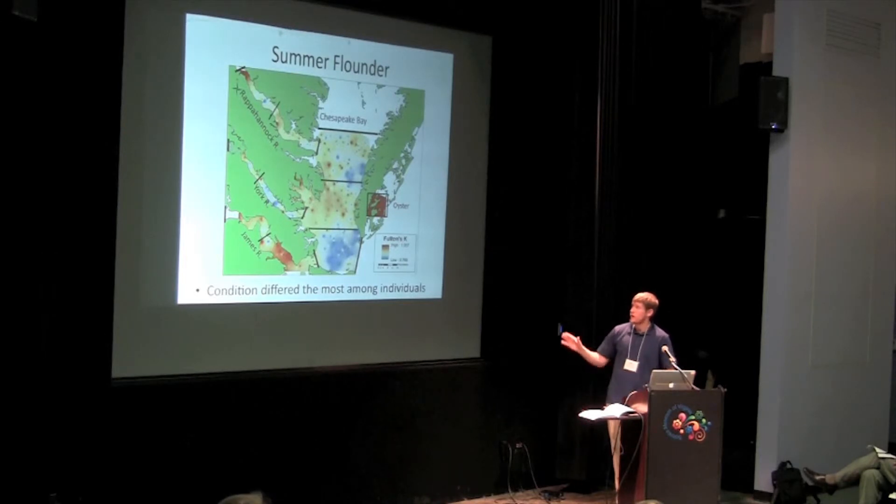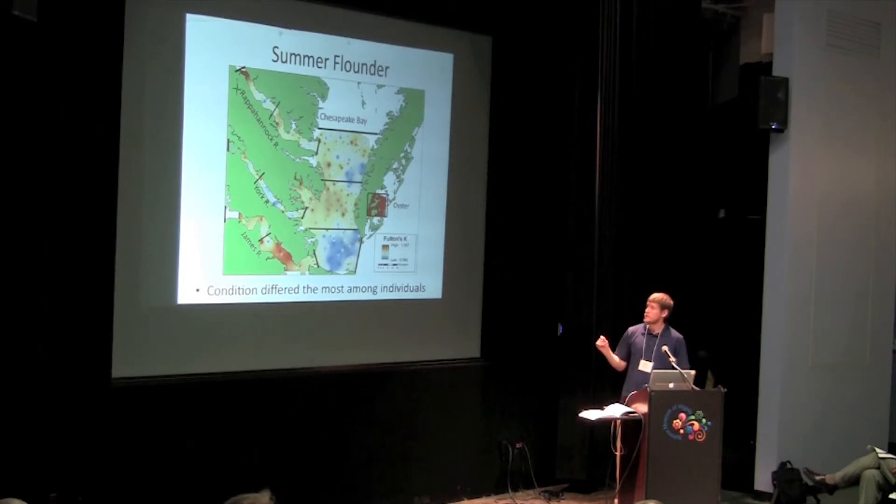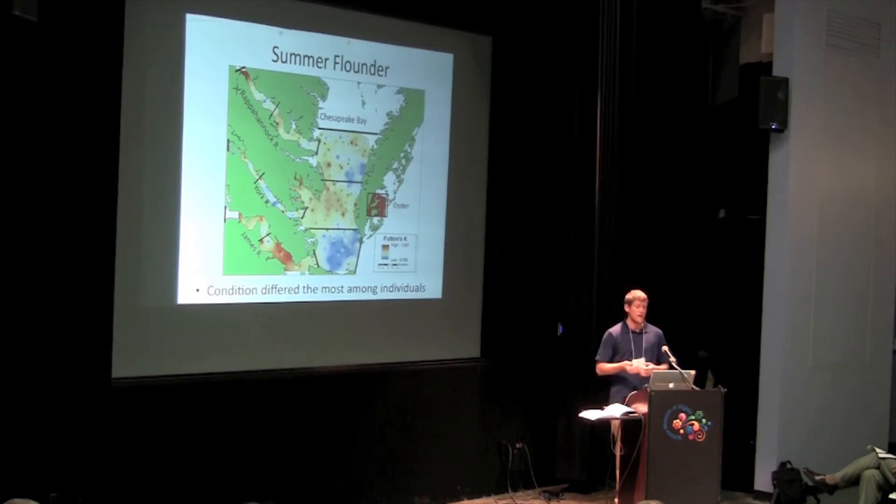However, as you can see, there are trends in condition. The red denotes high condition and the blue denotes low condition. Those healthier fish we found in Oyster, Virginia and in parts of the James River, whereas low condition flounder were found in the upper and lower Bay regions.